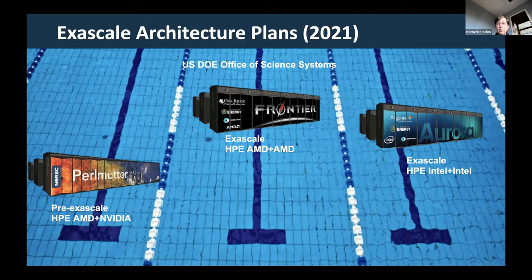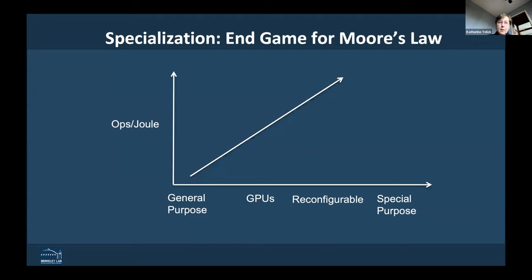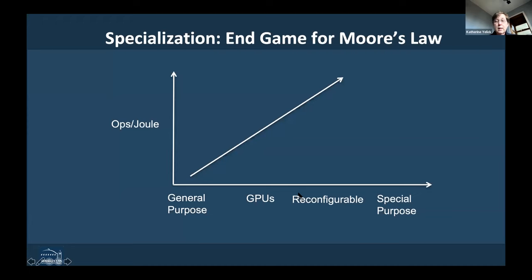There are a lot of accelerators in the Top 500 list — around 150 or so machines even as of 2020 had accelerators. Another trend is more specialization. GPUs obviously started as something designed for graphics and have become much more general — sometimes called GPGPU for general purpose GPUs. I think we're going to see more specialization in the future, and certainly now a lot in deep learning workloads.